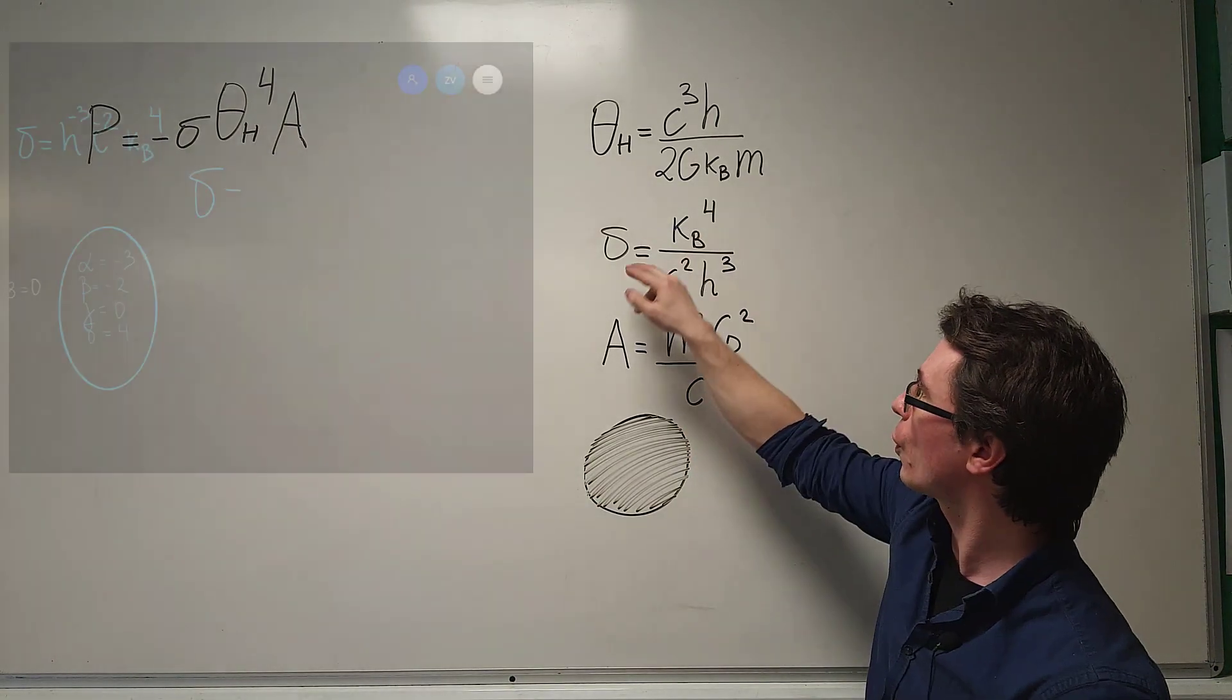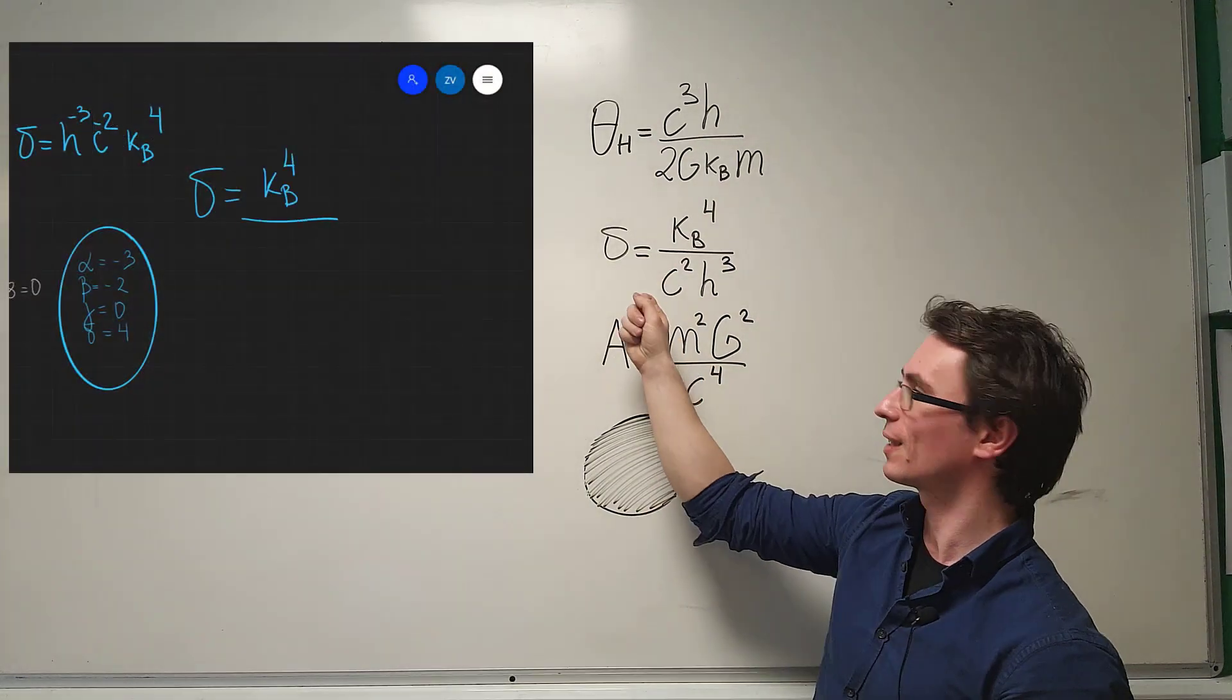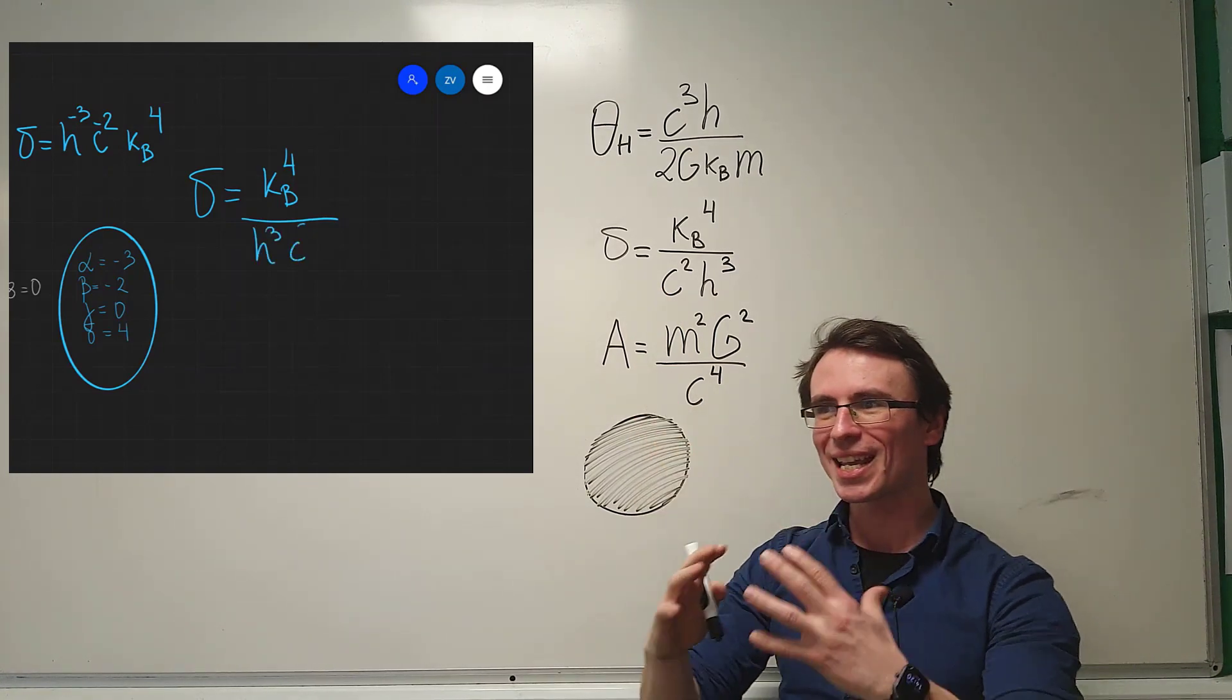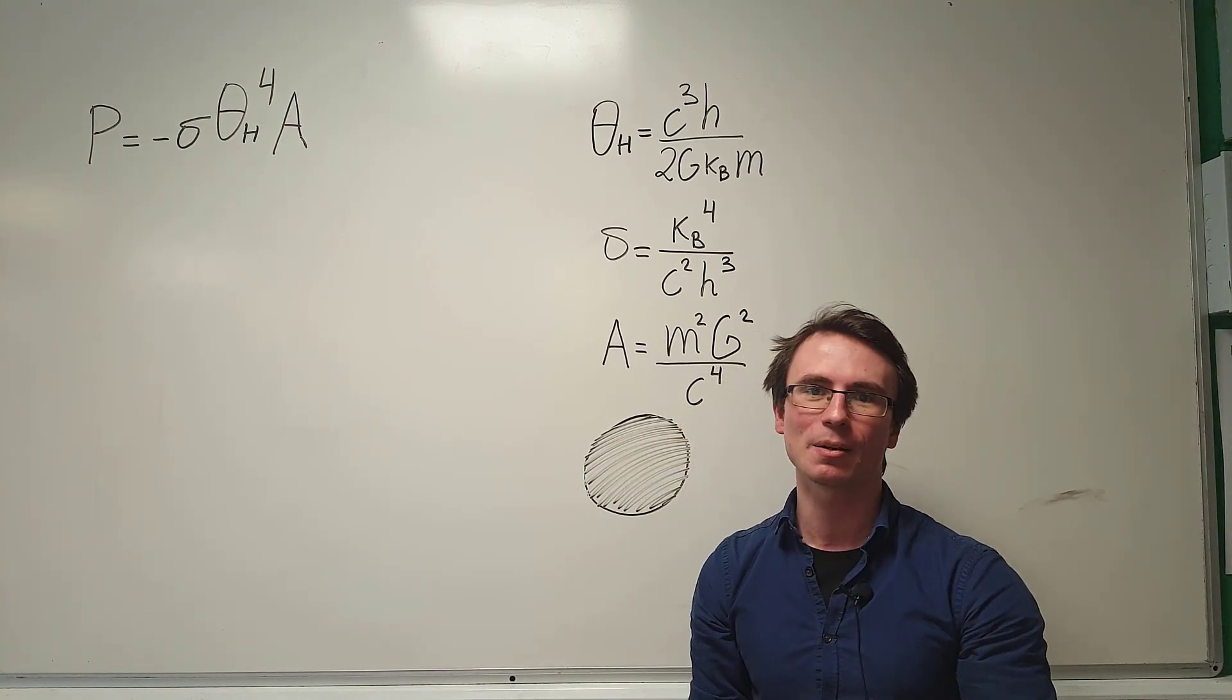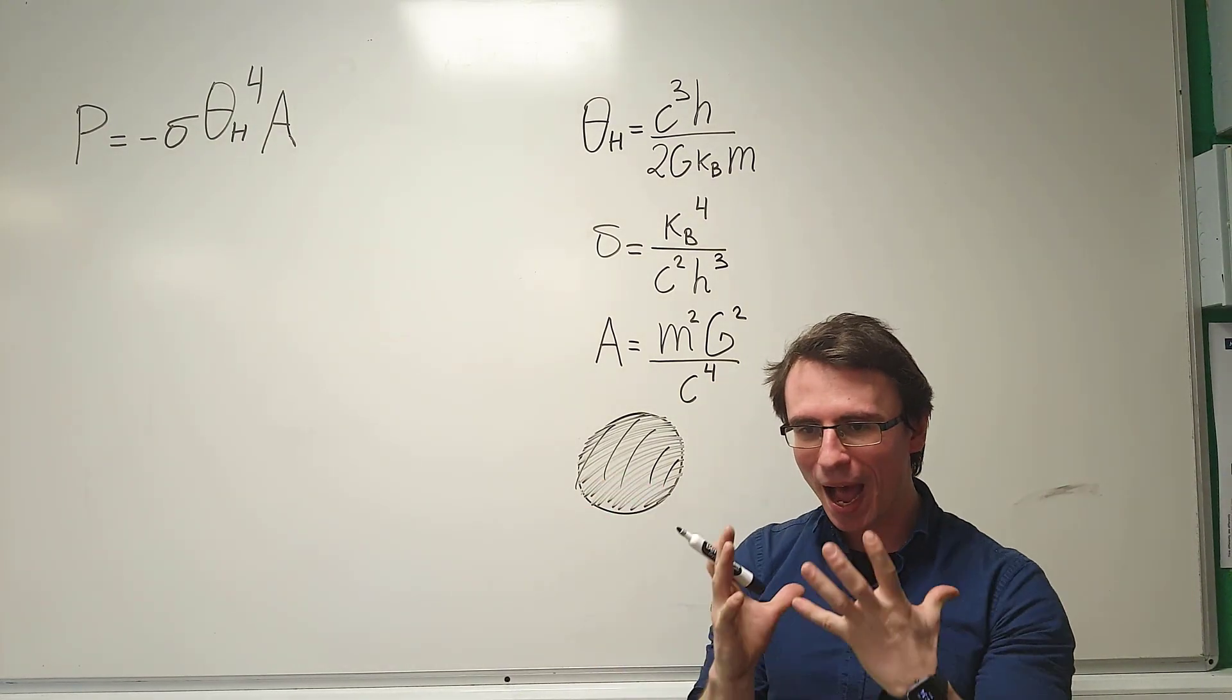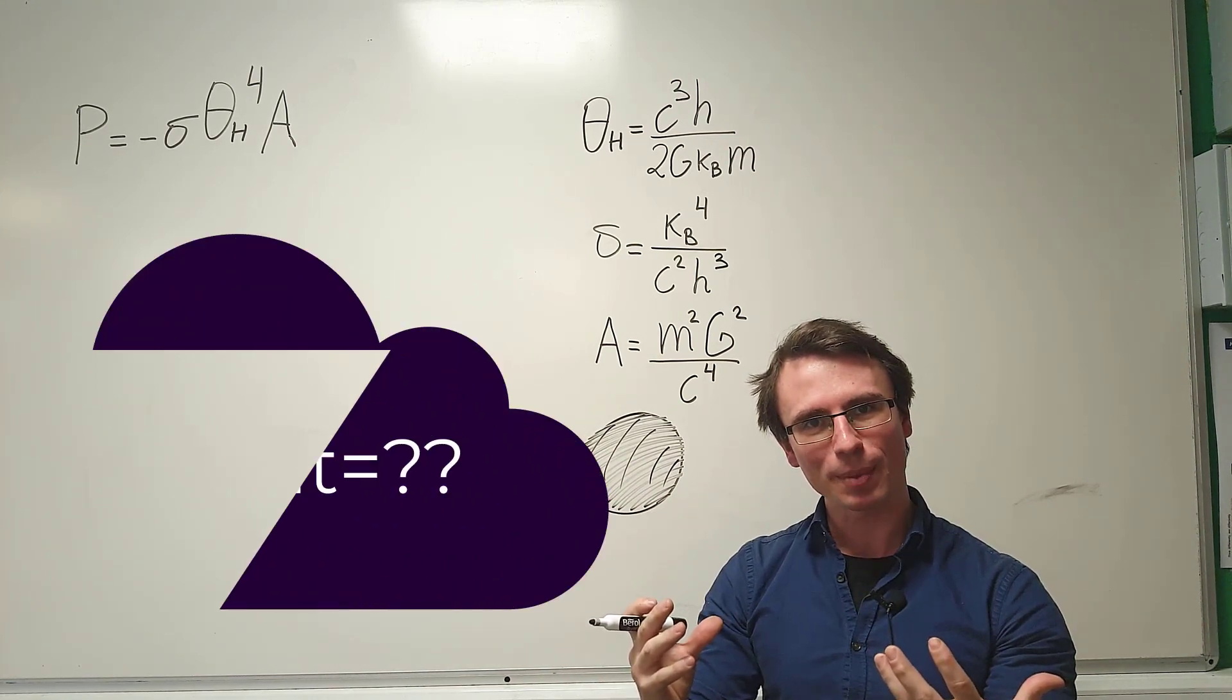We've also looked at the dimensional analysis that has enabled us to find an expression for sigma, which is just a constant, and A, which is the area of the event horizon, the boundary, the edge of the black hole. Now, let's see if we can find out how does that loss of energy over time affect the mass of the black hole.